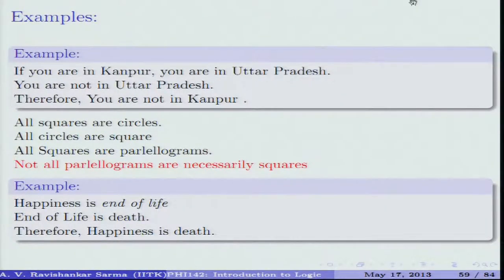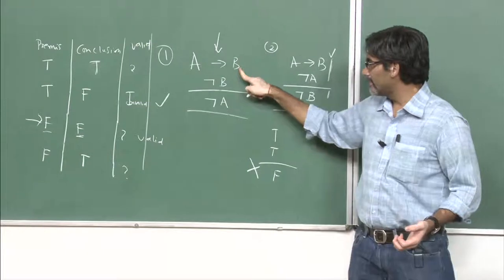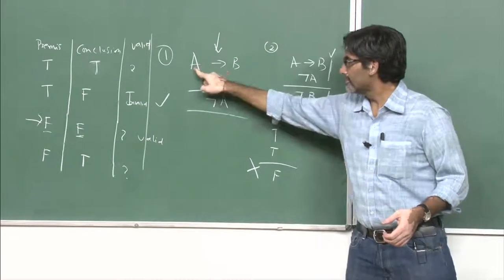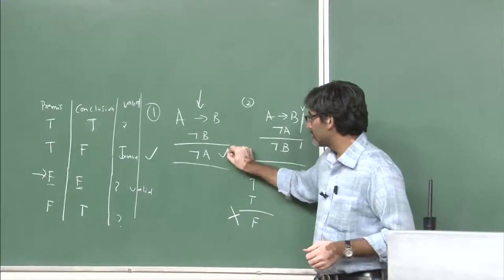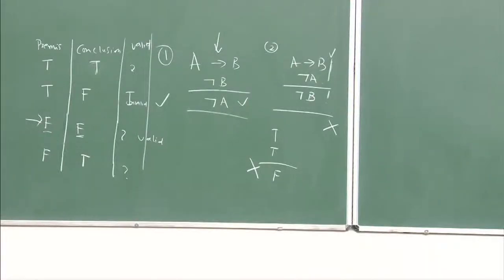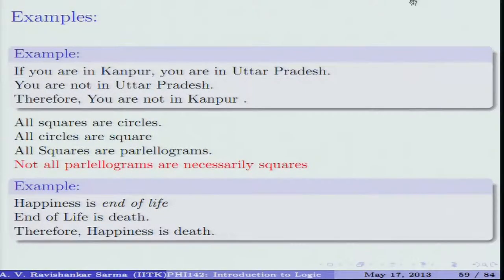For example: 'If you are in Kanpur, you are in Uttar Pradesh; you are not in Uttar Pradesh; therefore you are not in Kanpur.' This is a valid argument — a valid form. Another example: 'All squares are circles; all circles are parallelograms; therefore all squares are parallelograms.' You have false premises but a true conclusion, and it is still a valid argument. But to determine if it makes sense, you need to invoke soundness.